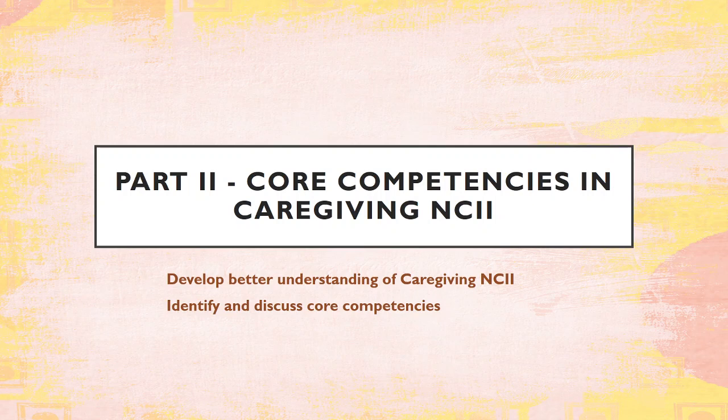On the last learning video, we discussed Part 1, or Competencies in Caregiving. We covered six core competencies: provide care and support to infants and toddlers, provide care and support to children, foster social, intellectual, creative, and emotional development of children, foster the physical development of children, provide care and support to elderly, and provide care and support to people with special needs.